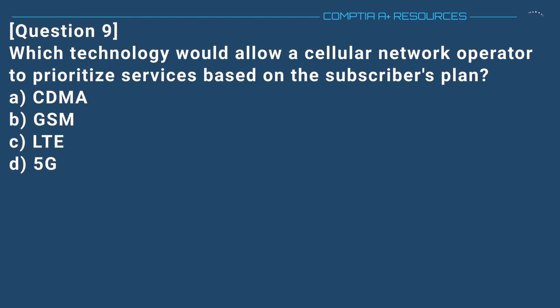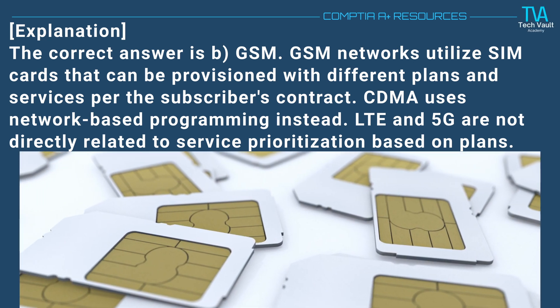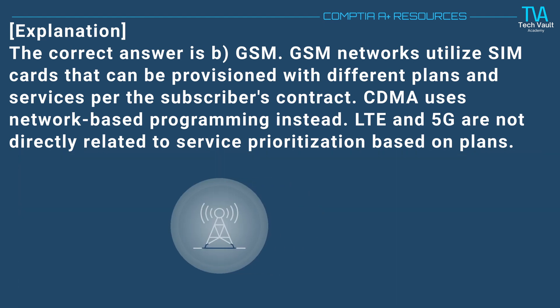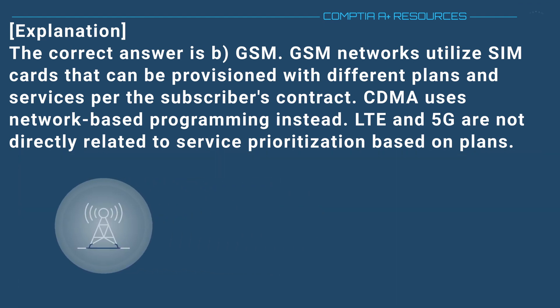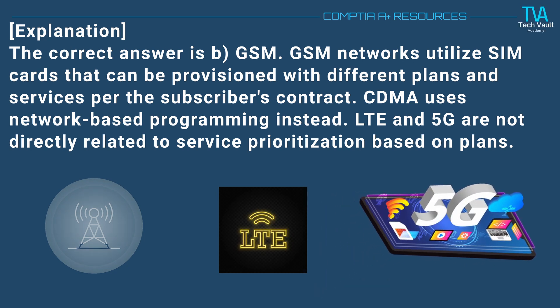Question 9. Which technology would allow a cellular network operator to prioritize services based on the subscriber's plan? A. CDMA. B. GSM. C. LTE. D. 5G. The correct answer is B. GSM. GSM networks utilize SIM cards that can be provisioned with different plans and services per the subscriber's contract. CDMA uses network-based programming instead. LTE and 5G are not directly related to service prioritization based on plans.